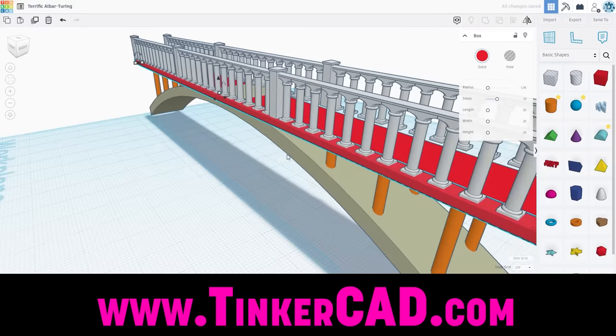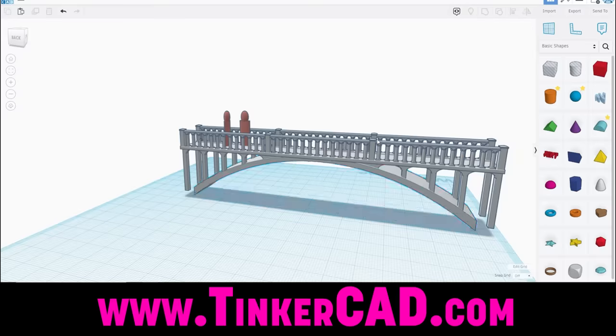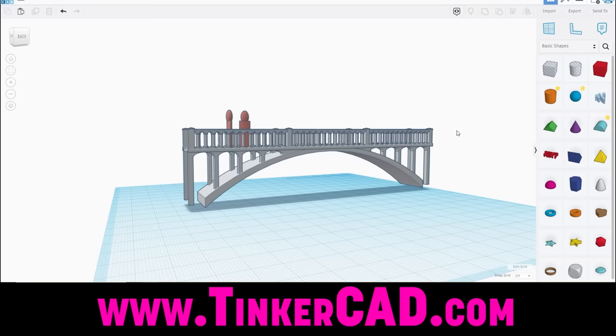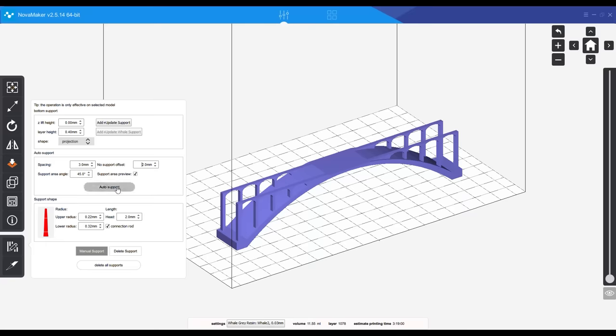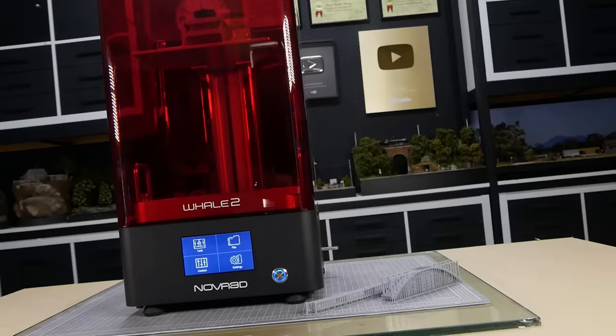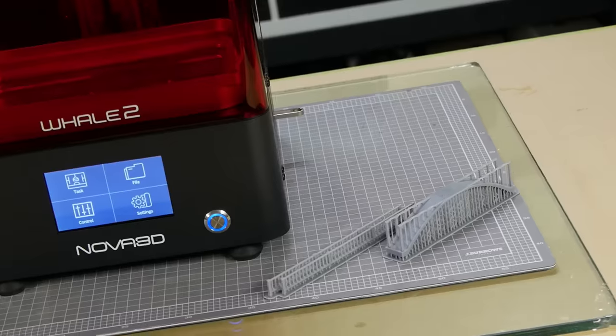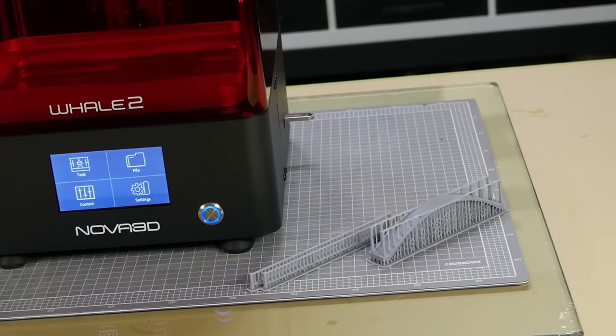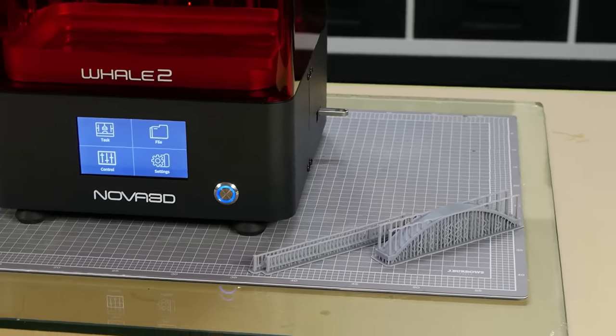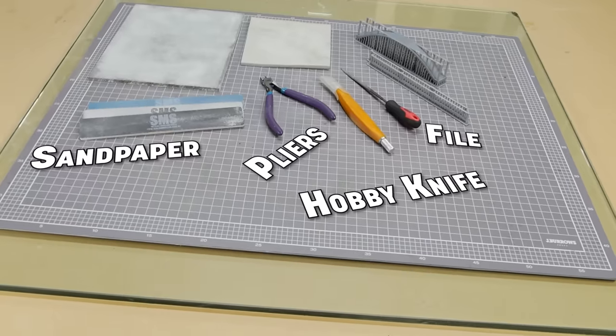When it comes to 3D modeling basic 3D shapes, Tinkercad is just about as easy as it gets. Once you master the basics you can pretty much model any structure. Once finished modeling the bridge in Tinkercad, it is brought into the 3D printing slicing software where it has supports added. To print the bridge I used the Nova 3D Whale 3D printer.